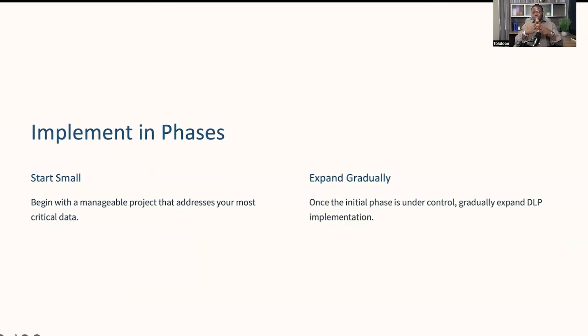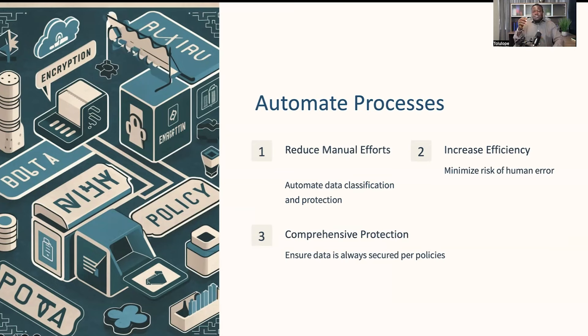You also need to implement DLP in phases — you're not going to do everything at once. Start with small, manageable projects that address your most critical data. For instance, you might begin by protecting customer data in your sales department. Once you have that initial phase under control, you can gradually expand your DLP implementation to other areas. Finally, automate processes wherever possible. Automation reduces the risk of human error and increases efficiency. Automated data classification tools can quickly and accurately label new data as it's created, ensuring it's always protected according to your established policies.